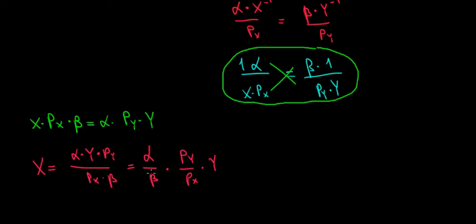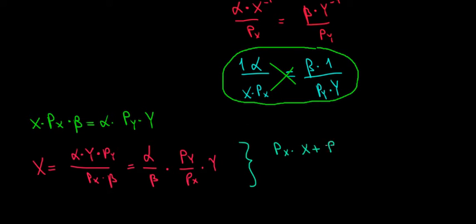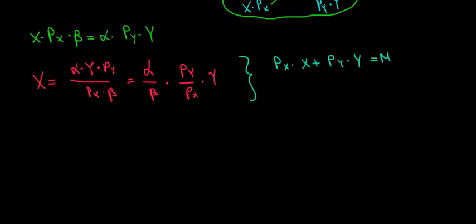This is just to see that there is a relationship between the prices, between the exponents, between x and y. Now to prove this relationship, let's substitute this x into our budget constraint. Recall that our budget constraint is the price of x times x plus the price of y times y equals m.